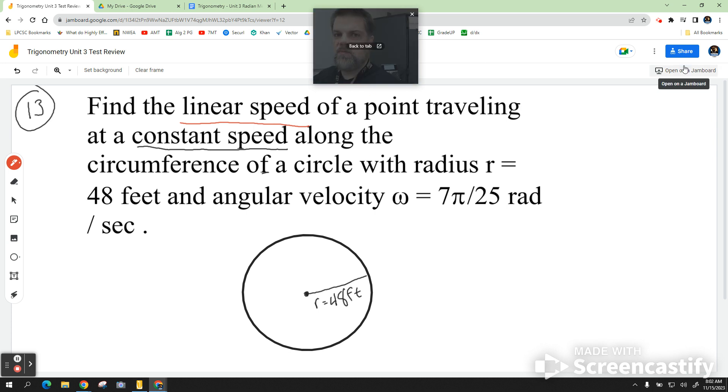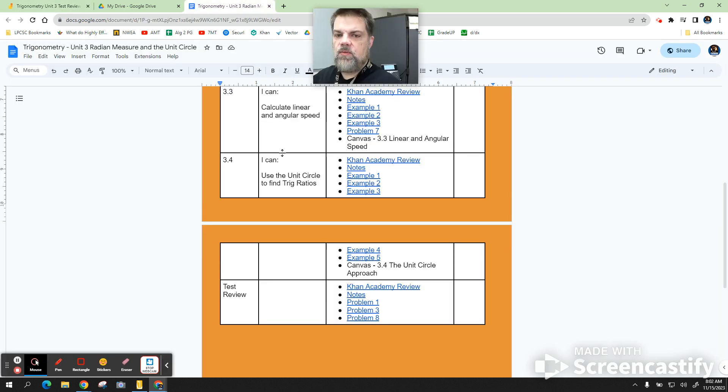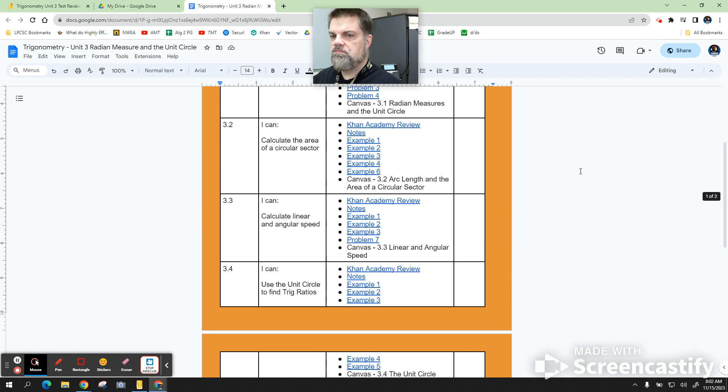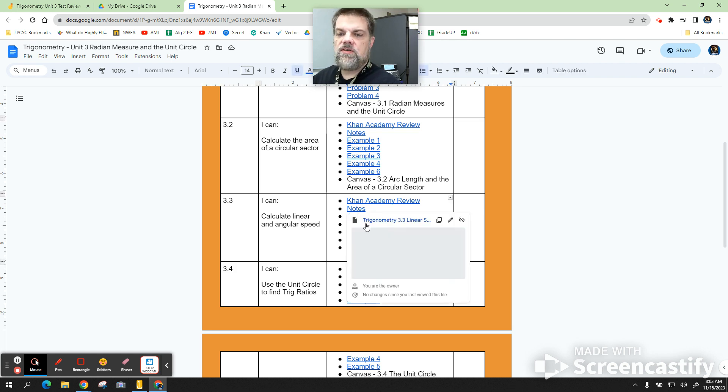So, what we could do is I'm going into the unit document that shows all the lessons that we did. And so, 3.3 is where we calculated linear and angular speed. So, if you don't remember how to do this stuff, this is what you're supposed to do when you study for a test. You look at your notes.